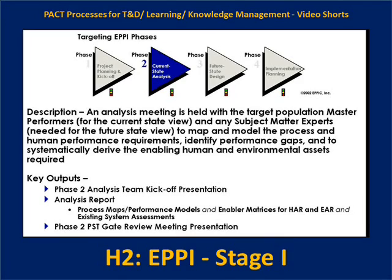In Phase Two, an analysis team meeting is held with the target population's master performers so they can articulate what the current state is. We might also use other subject matter experts to help us understand the future state, so that when we get to Phase Three we can articulate and compare the two.